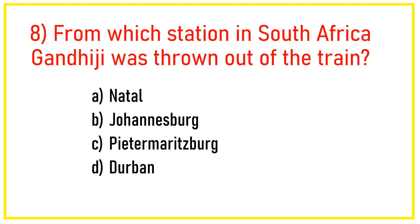Q8. From which station in South Africa was Gandhiji thrown out of the train? Answer: Option C — Pietermaritzburg.